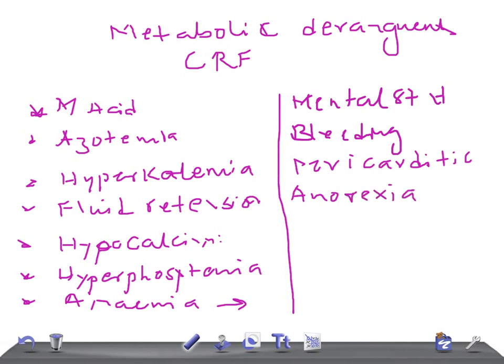Other manifestations include anorexia, nausea, and vomiting. We also see skin pigmentation and itching in chronic renal failure patients.